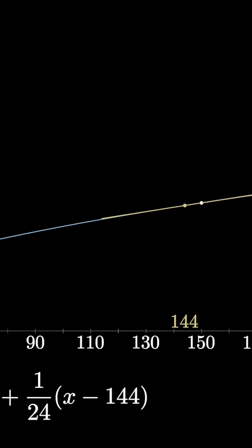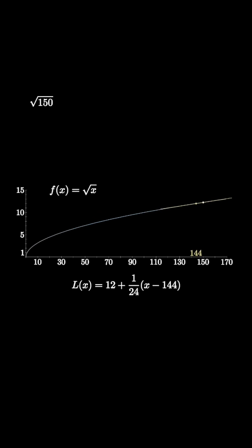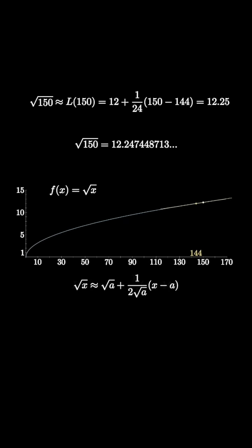So we can plug 150 into the linear approximation to get an approximate value of the square root of 150 to be 12 plus 1 over 24 times 150 minus 144. This is equal to 12.25, which is not too far off the actual value shown here.